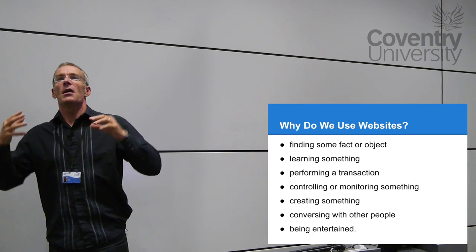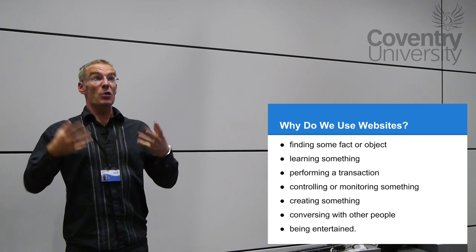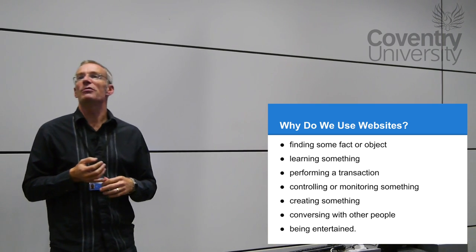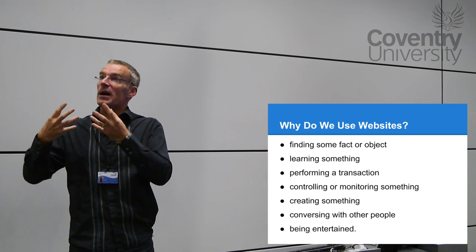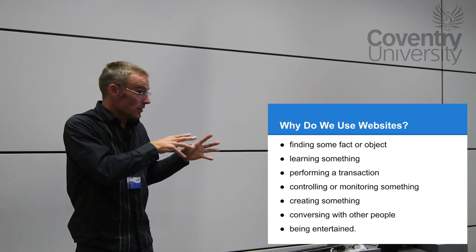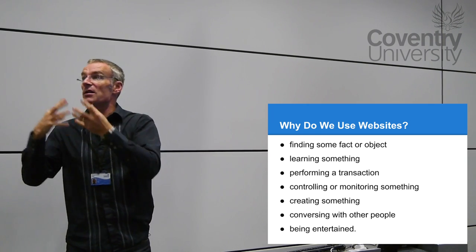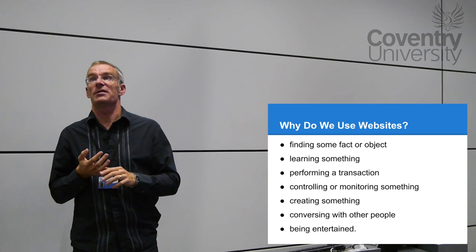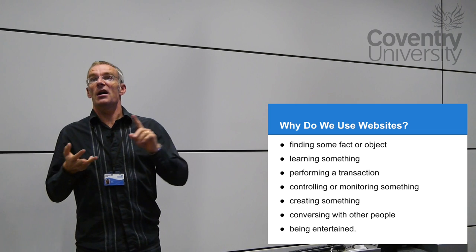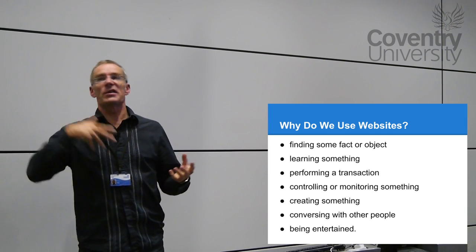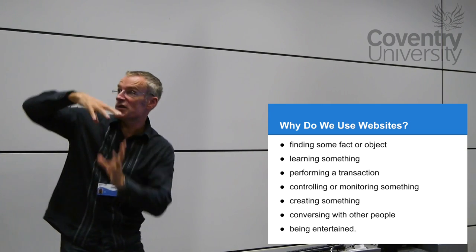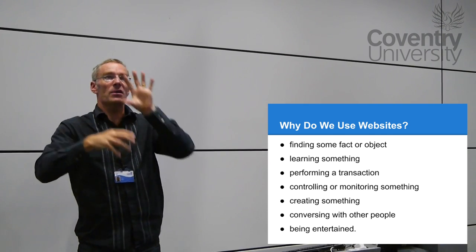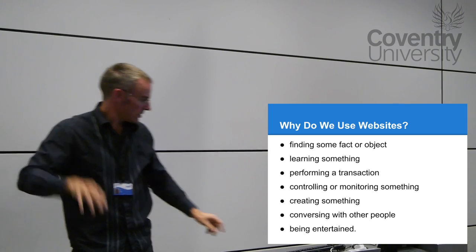The first thing you have to think about is what you're actually going to do with your website. I've pulled together a few lists of things we do with websites. Think about how these relate to your project — whatever you design and build should support the particular use. The first is finding a fact or object: sites like Wikipedia or eBay. You need search boxes, lists of search results, and summary displays.